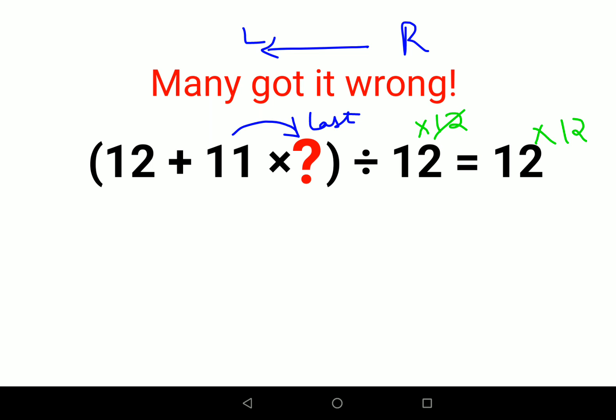What happens here is this 12 and this 12 gets cancelled and I'm left with 12 plus 11 into question mark equals to 144.